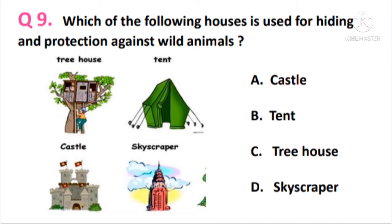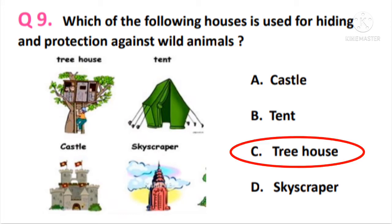Question 9. Which of the following houses is used for hiding and protection against wild animals? The answer is option C — treehouse. It's not safe to use tents while we are in the forest area; it's better to use treehouses against wild animals.